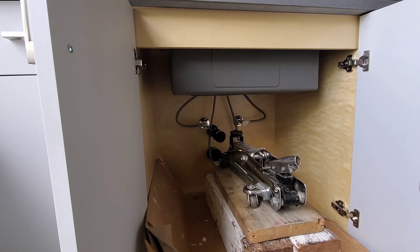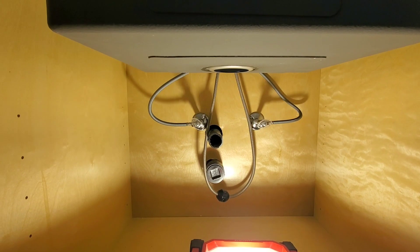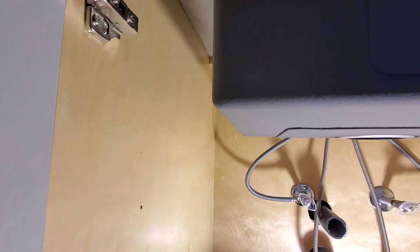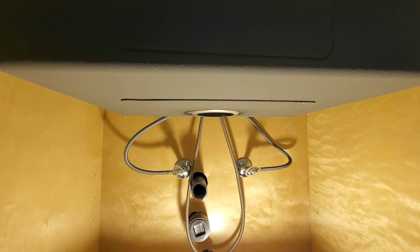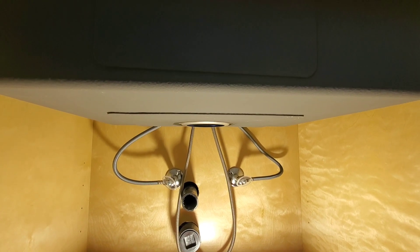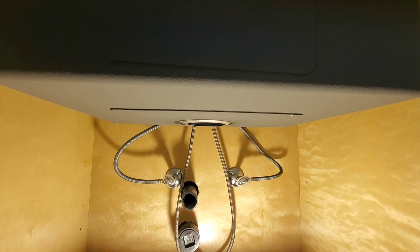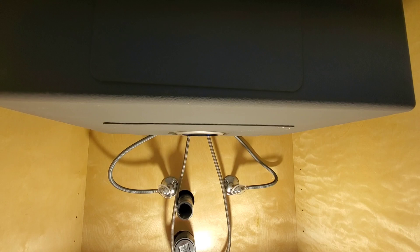This is one of the key things with an undermount sink. You can't install it like this without any straps because especially with a kitchen you're going to have dirty dishes, water. Over time the silicone is not going to be able to bear the weight. Strapping is essential and at least here in Canada if you don't strap your sink up you will fail inspection. You need to make sure that it's nice and tight. I'm going to show you my method for strapping up undermount sinks. I've never had a problem with my approach here.